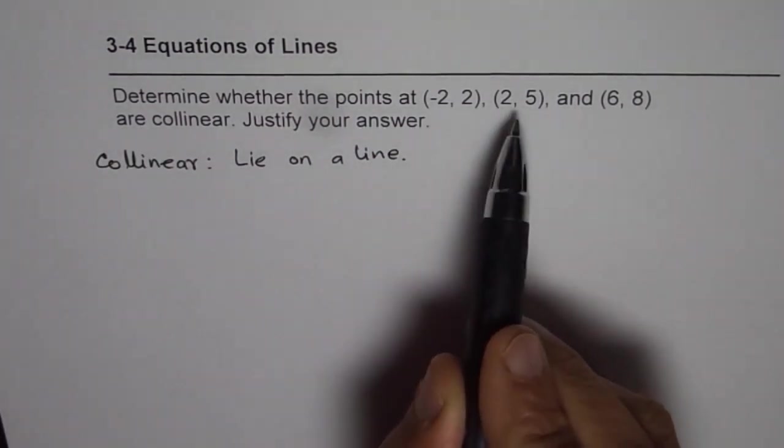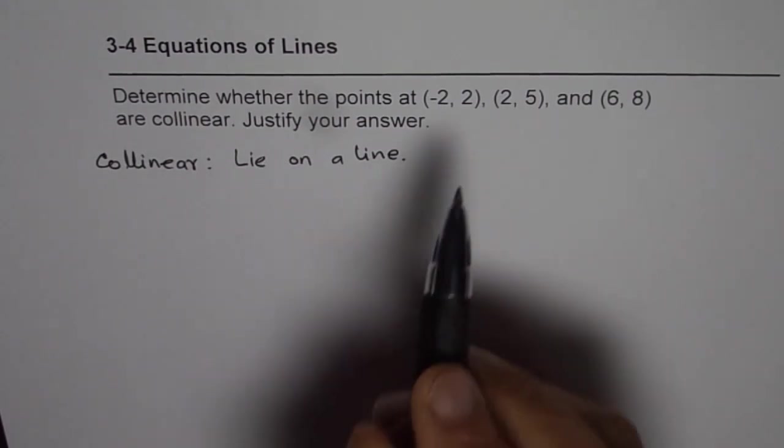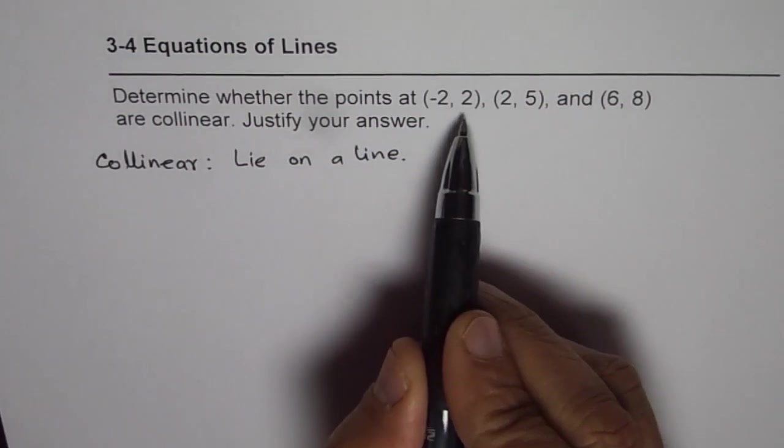Now to verify whether the given three points will lie on a line or not, what we should do is find the equation of the line using any two points.